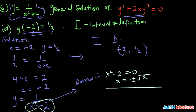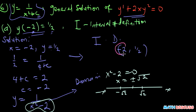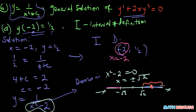If we draw this on a number line, we have negative infinity, zero, negative root 2, and root 2. This gives us three intervals. We need the one that contains x equals negative 2. You can observe that negative 2 falls in the leftmost interval — that is, the interval to the left of negative root 2. So we won't use the other two intervals.